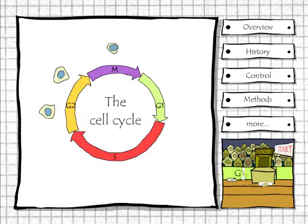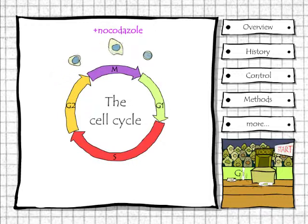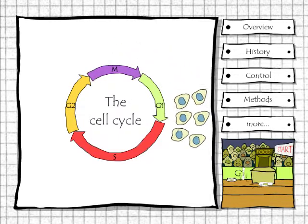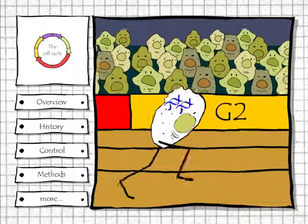Yes, you can stop these so-called transformed cells using nocodazole, an agent that stops all cells in the mitotic phase. Once the drug is washed away, all cells will divide at the same time. Let me try!